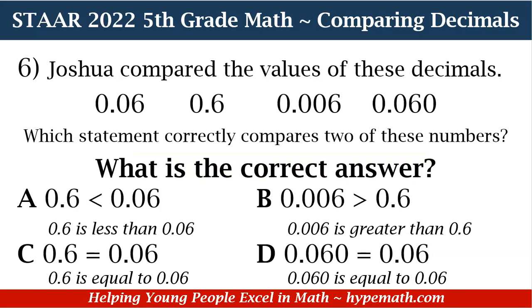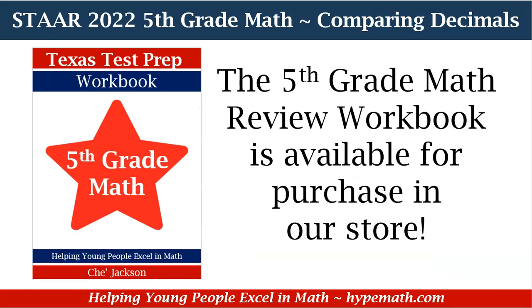The correct answer is D. 0.060 is equal to 0.06 — because six hundredths equals six hundredths. That's how you say both of those decimal values. And that is it for this review, fifth graders. If you would like to follow along as we go through the problems, you can purchase one of the books in our store — the link will be in the description box. This is Shea Jackson. I will talk to you later.